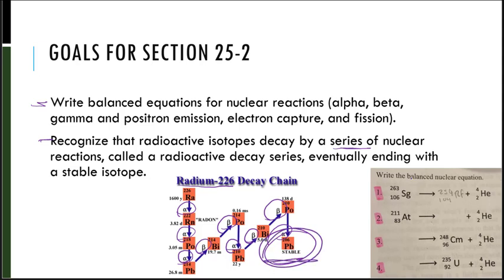Here's looking at balancing nuclear equations, looking at the left and the right, and figuring out what that unknown is. And to do so, we need to know atomic number and mass numbers on the left and the right.